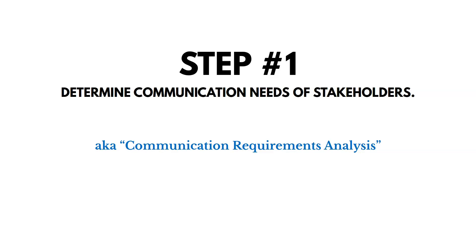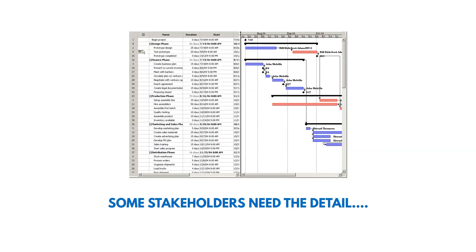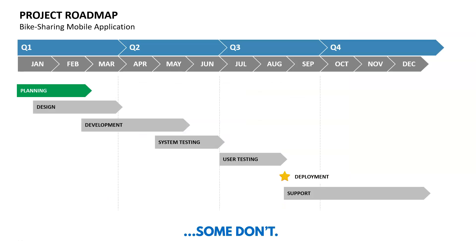Now let's talk about planning communications. The first step is to determine the communication needs of our stakeholders, and we call this communication requirements analysis. We're documenting the requirements of our stakeholders: what information do they need, when do they need it, who should send it, and so on. Some stakeholders need detail, like a detailed Microsoft Project schedule, but others may just want a high-level roadmap by month and don't need to see every activity every day.